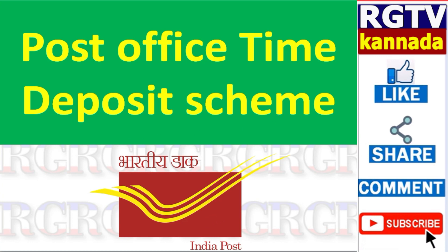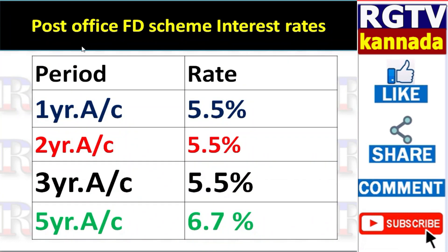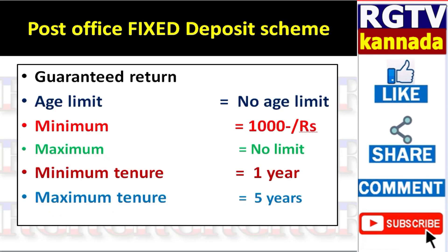The Post Office FD Scheme interest rates: for a maturity period of 1 year to 3 years, you get a 5.5% interest rate. If you select a different maturity period, you get a 6.7% interest rate. This is the present interest rate.